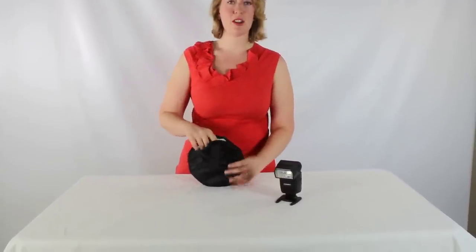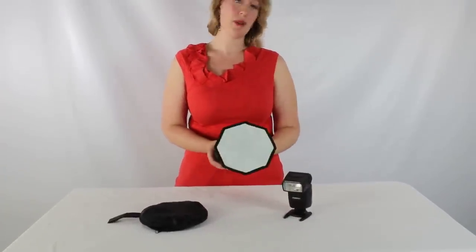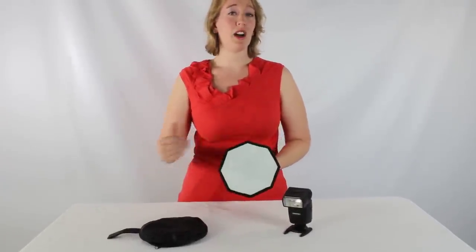This is very similar to our square or rectangular speedlight diffuser, but this one is going to be octagon shaped. Some people ask, why would I want the octagon versus the square or the rectangular?